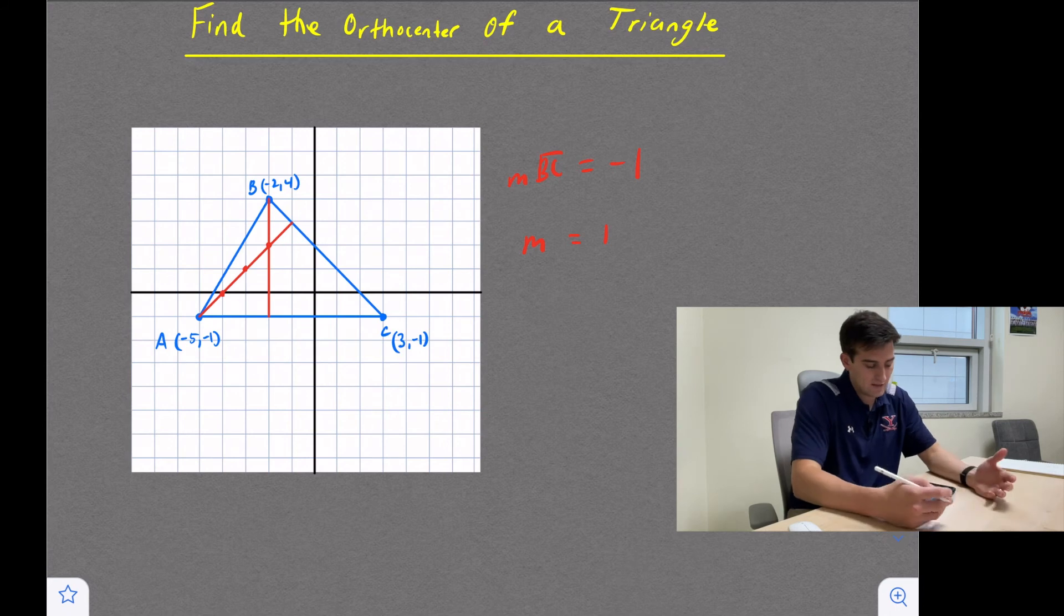So now I draw it right there, and now I see an intersection that I have between two of my altitudes.